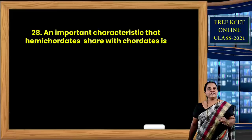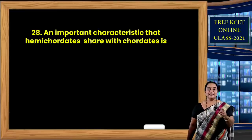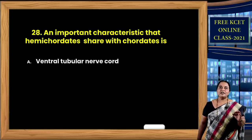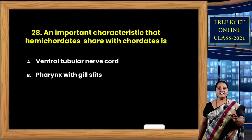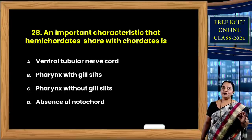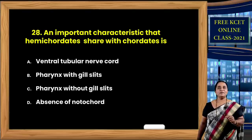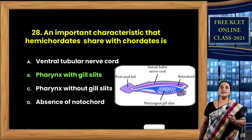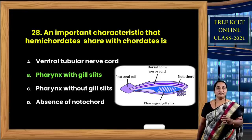Question 28: An important characteristic that hemichordates share with chordates — options: ventral tubular nerve chord; pharynx with gill slits; pharynx without gill slits; absence of notochord. Hemichordata is now separated from chordata, but they share one similar feature. The correct option is B — both groups have pharynx with gill slits for respiration.